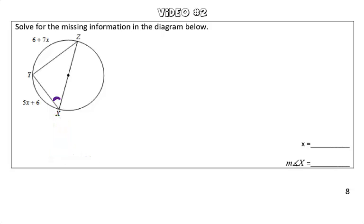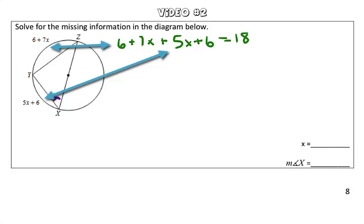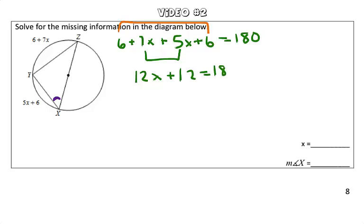What we can do to solve for our variable x is, we can take the two arcs that we're given, so 6 plus 7x, or arc yz, plus 5x plus 6, or arc xy, and set that equal to 180 degrees, because that is the measurement of a semicircle. Combining our like terms, we get 12x plus 12 is equal to 180.